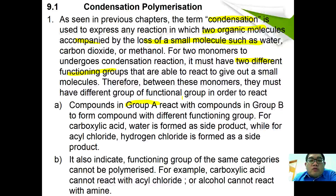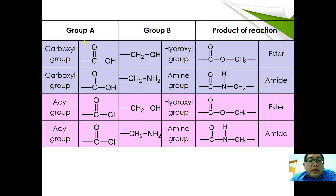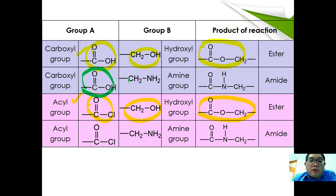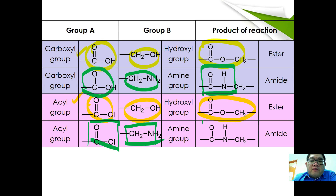Generally, compounds in Group A react with compounds in Group B to form a new compound. For carboxylic acid, water is formed as a side product, and for acyl chloride, hydrogen chloride is formed as a side product. Functional groups in the same category cannot be polymerized with each other. Group A consists mainly of carboxyl and acyl groups. When a carboxyl group reacts with a hydroxyl group, a new functional group called an ester is formed — producing a polyester. Similarly, acyl chloride reacting with an alcohol also gives an ester. To form a polyamide, you react a carboxyl group with an amine, or better, use acyl chloride reacting with an amine to form an amide functional group.